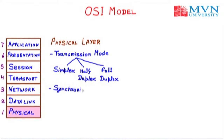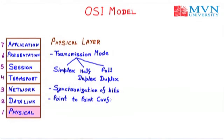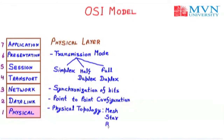The second function of the physical layer is synchronization of bits. The third is point-to-point configuration or line configuration. The fourth provides physical topology to the connection — we have various physical topologies such as mesh, star, bus, ring, and more. This defines how to communicate with other media and how to connect using topologies. The physical layer is also used for encoding and representation of bits, and works on the bit stream.